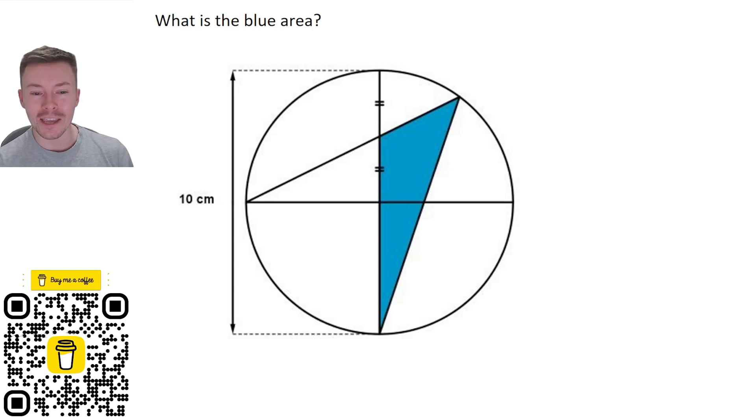Hello, welcome back to my channel. Today we are going through this problem here, which is finding the blue area of this inscribed kite shape, an arrowhead inscribed in a circle. The circle has a diameter of 10.